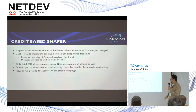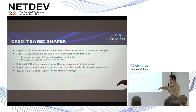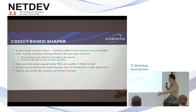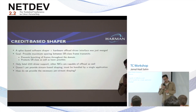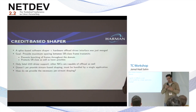Recently, engineers from Intel provided a QDisc-based software shaper and hardware offload for it, implementing the credit-based shaping algorithm in the standards. Currently there's only I210 driver support, but there are many other NICs in the kernel tree capable of this offload. I'd like to provide patches enabling this shaper offload in those other NICs. One issue is that the credit-based shaper algorithm requires shaping on a per-stream basis, not just per traffic class, which is what this shaper provides.